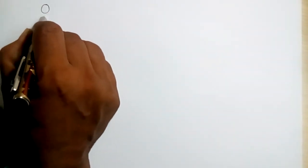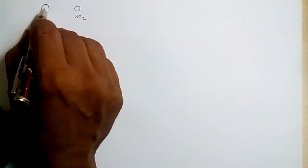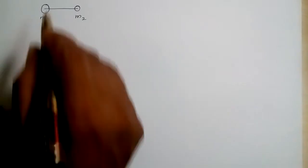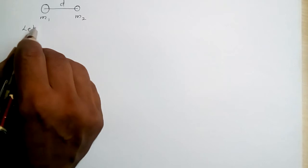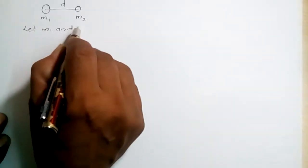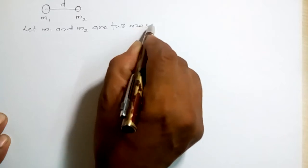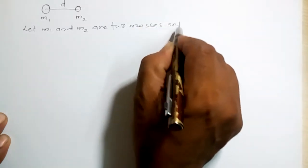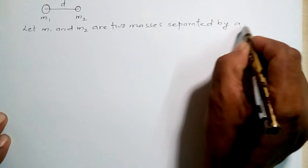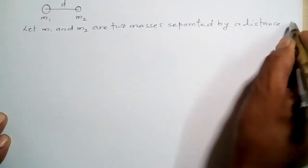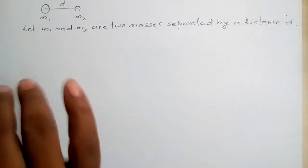Let's say this is a body whose mass is taken as M1, and this is another body whose mass is taken as M2. M1 and M2 are two masses separated by a distance D.